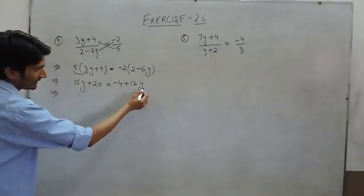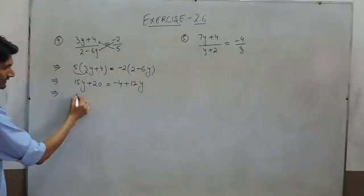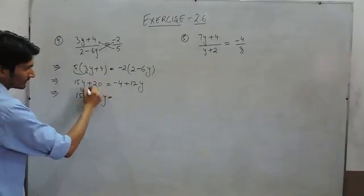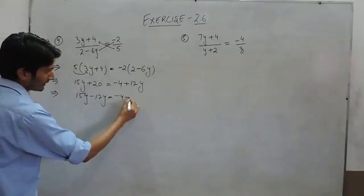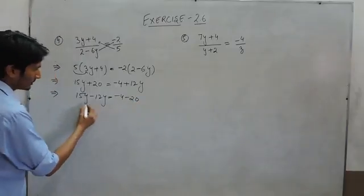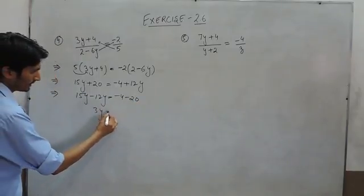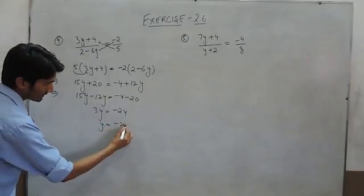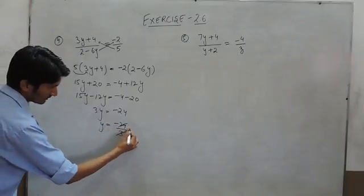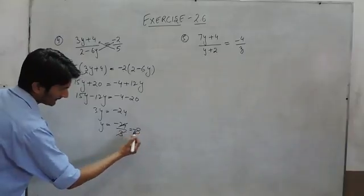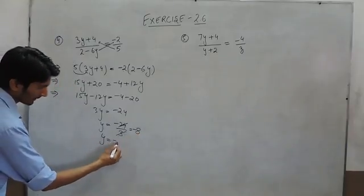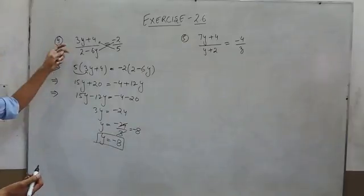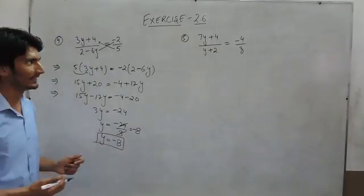So this variable can simply be shifted to this side, so this is minus 12y, and this constant when shifted to that side is minus 20. So this is 3y, this is minus 24, so y is minus 8. The value of y for this particular expression is minus 8.